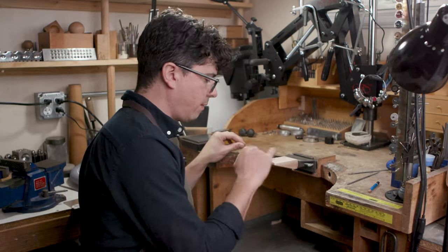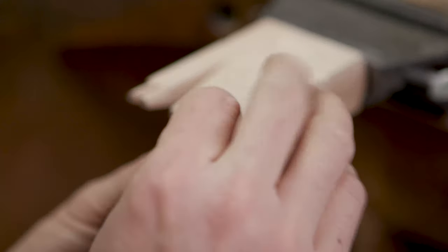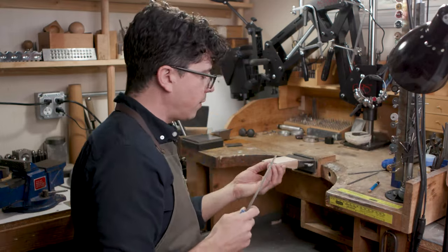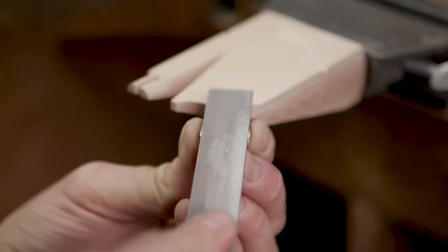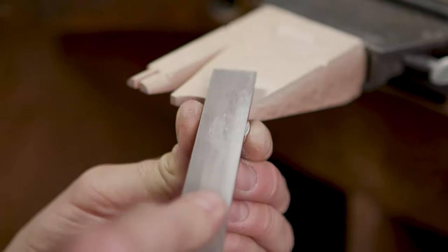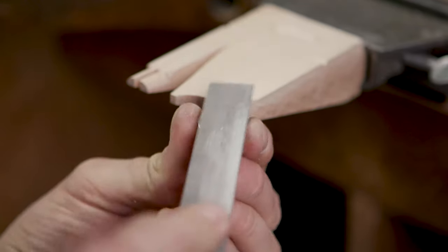Then we have this little ledge right here, and this is great for holding rings on their side to file them clean. It takes very little hand strength to hold that ring steady.